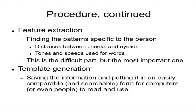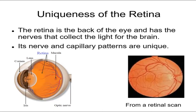Feature extraction is the most difficult part — finding patterns specific to a person and digitizing them, like the distance between cheeks, eyelids, the two eyes and nose, left eye to nose, right eye to nose, or tones and speeds used for words in voice recognition. You save the numerical values that represent that uniqueness. Finally, template generation puts all that information into an easily searchable database form so that millions of records can be automatically compared to a questioned or suspected image.